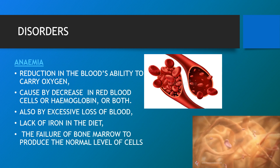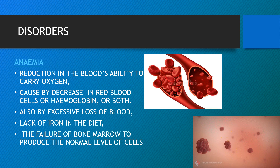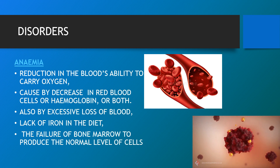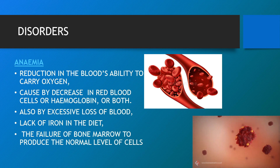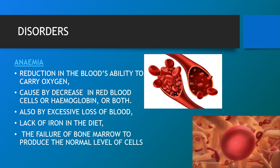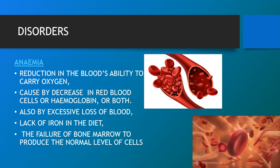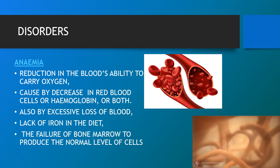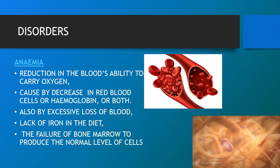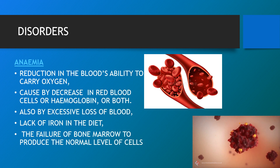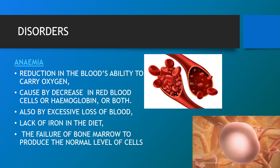Anemia is a decrease in the total amount of red blood cells or hemoglobin in the blood, or a lowered ability of the blood to carry oxygen. It is also caused by excessive loss of blood, lack of iron in the diet, and the failure of bone marrow to produce the normal level of cells. When anemia comes on slowly, the symptoms often include fatigue, feeling tired, weakness, shortness of breath and poor ability to exercise.